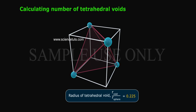Radius ratio of tetrahedral void, R void by R sphere, is equal to 0.225.